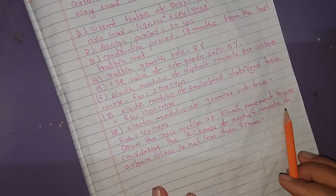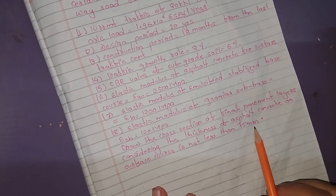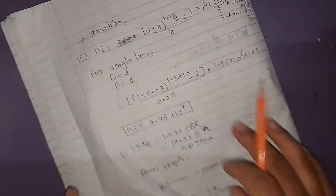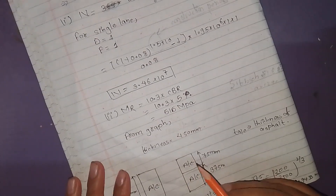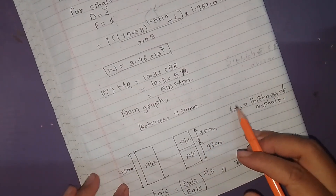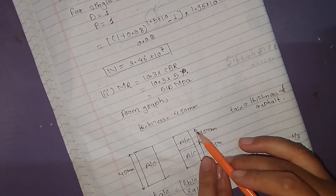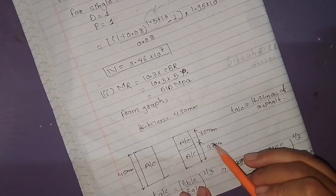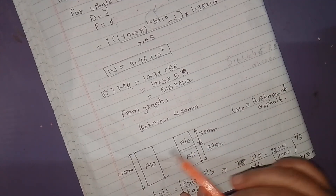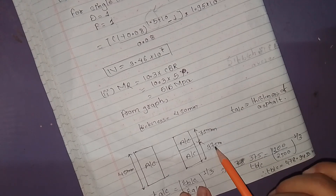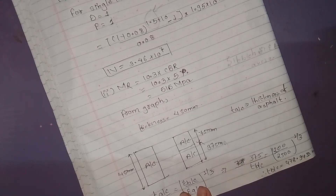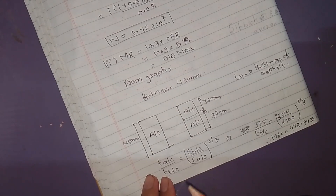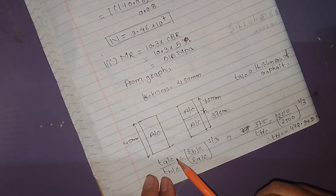We have to check the asphalt concrete thickness against the minimum of 75 mm. The total thickness is 450 mm, and subtracting the asphalt concrete layer of 75 mm gives 450 − 75 = 375 mm remaining for the base and subbase.